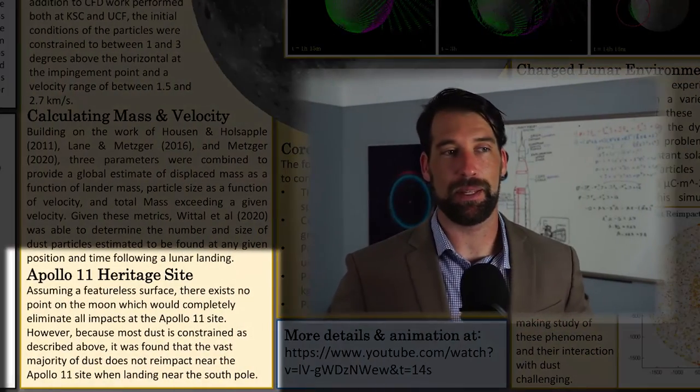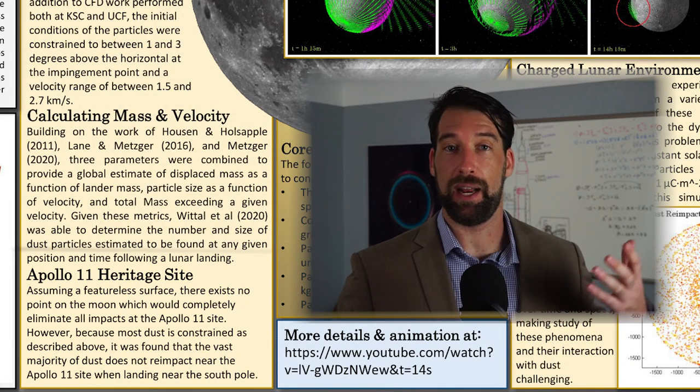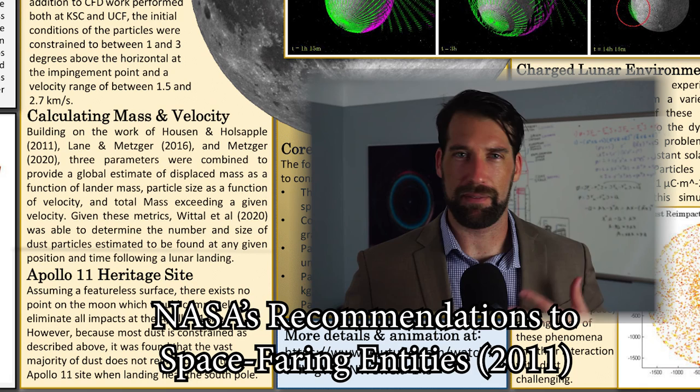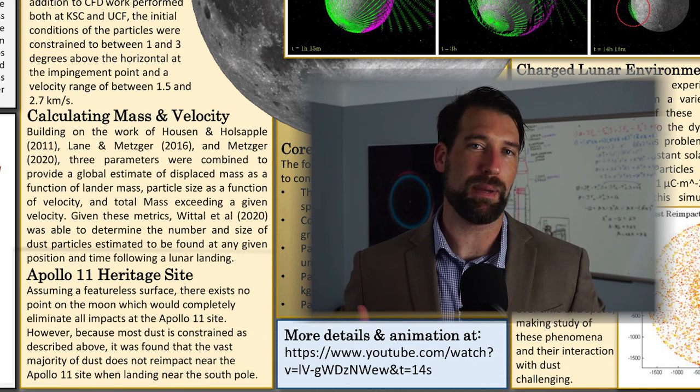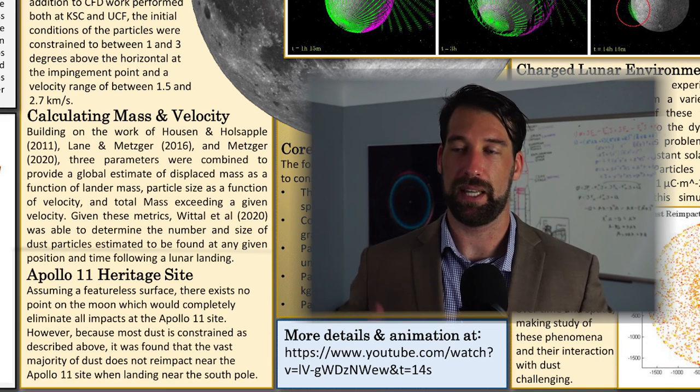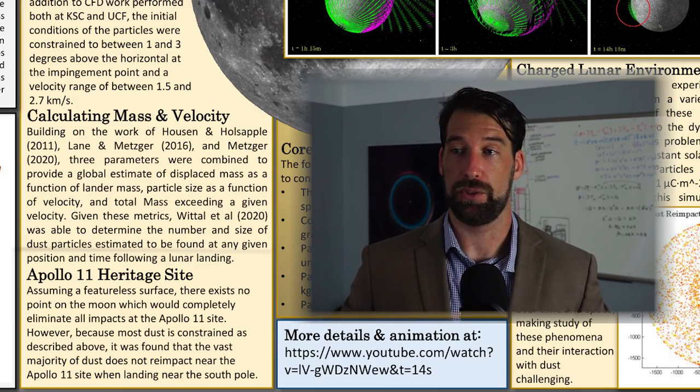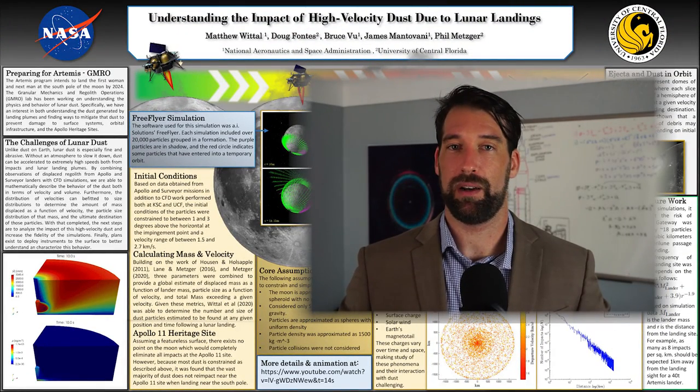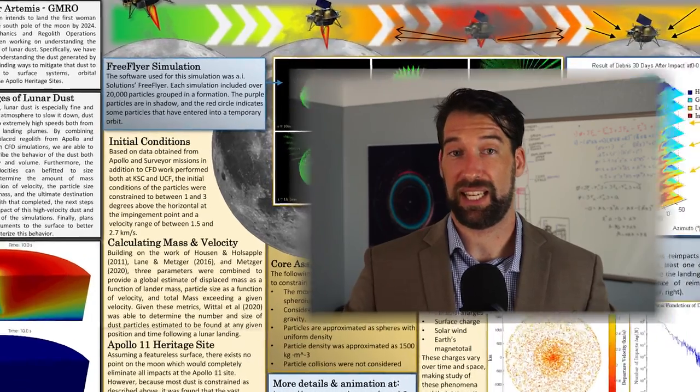Finally, recent work has examined the impact a landing on the south pole could cause to Apollo 11 and other heritage sites. Previous work done by NASA has estimated that a safe landing distance for the Apollo landing site was about two kilometers away. That was based off of the lunar horizon, which is about 2.6 kilometers, and rounded off, assuming that if it's beyond the horizon, it won't have a significant impact onto the Apollo 11 landing site. And there is no landing site on the moon that will completely eliminate the threat of re-impacting dust on the Apollo 11 or other Apollo heritage landing sites.